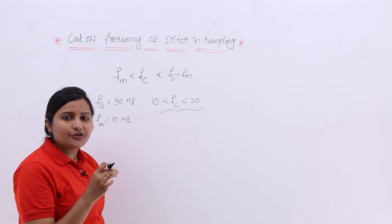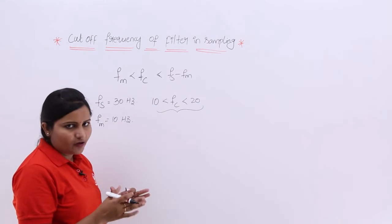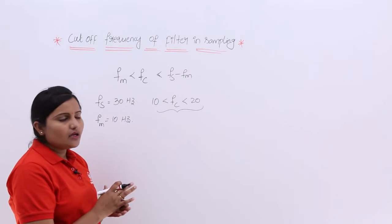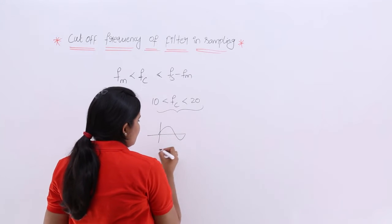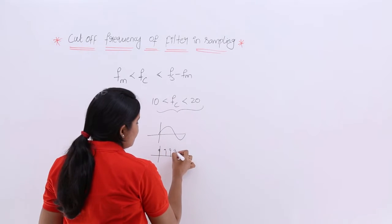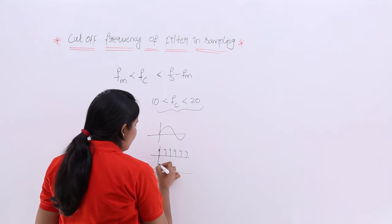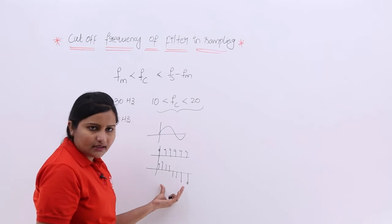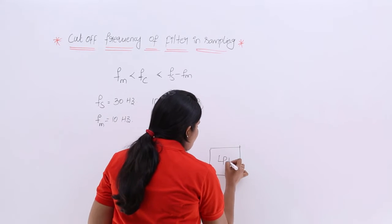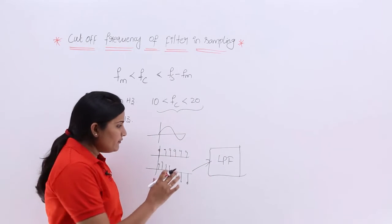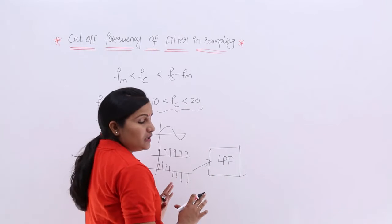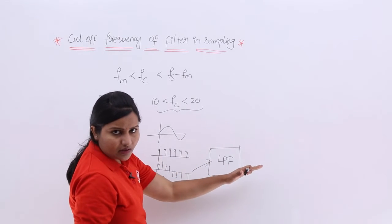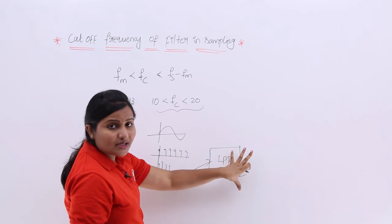The cutoff frequency of the filter must be maintained for an LPF or any filter to get your required signal back and to recover it. For example, if you have a continuous signal and you perform the sampling process by multiplying with an impulse train, you get a sampled signal in discrete form. After getting that sampled signal you pass it through an LPF. If your signal frequency is at FM and your sampling frequency is FS, you need to follow some cutoff frequency condition.